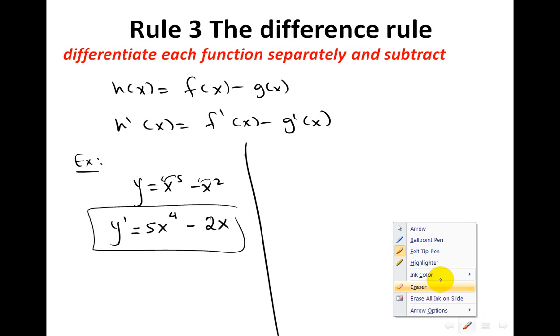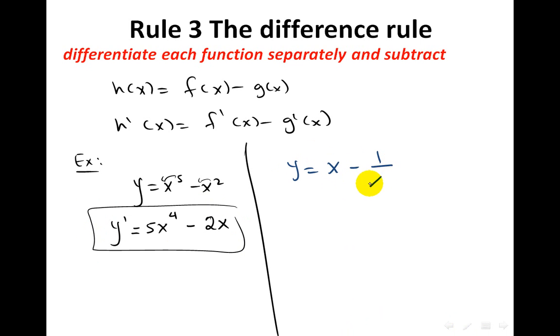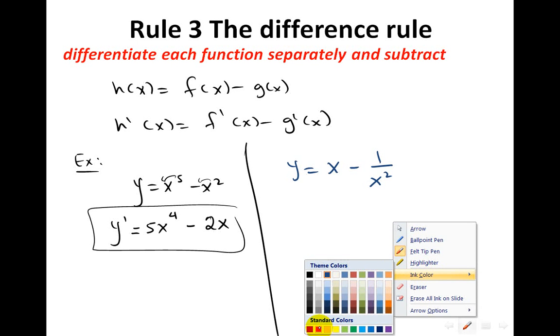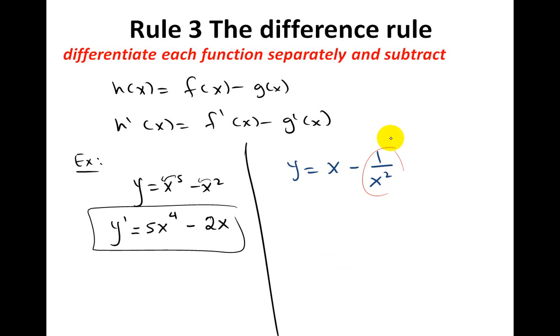Let's have another example. y equals to x minus 1 over x squared. Here, please don't forget to change this one. Make it in the form of x minus x to the power of minus half. Take the exponent up and it will be minus half. Now, we are going to work on each and every one now. I start to differentiate.